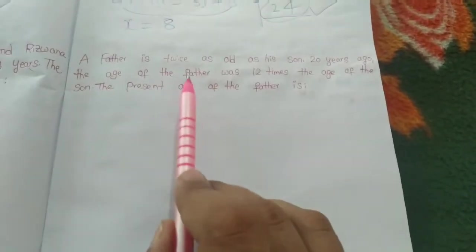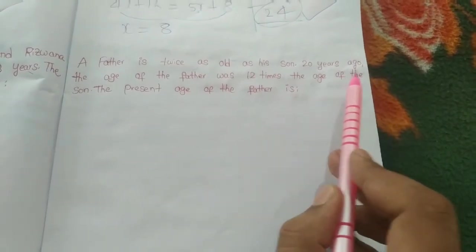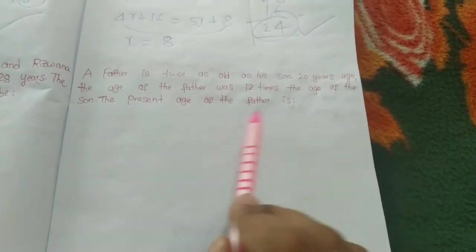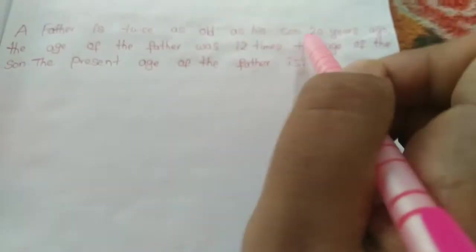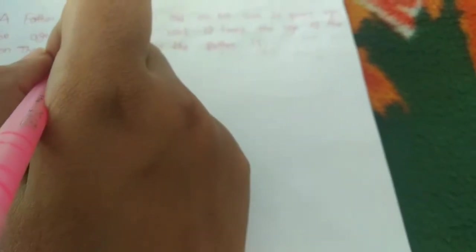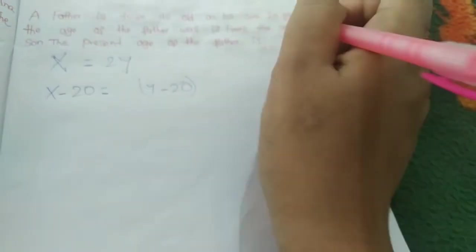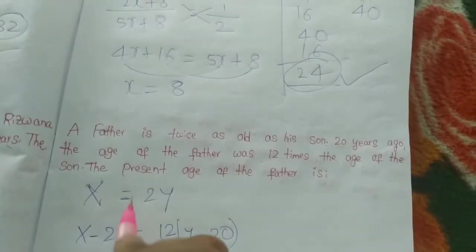Coming to the next question: if a father is twice as old as his son, and 20 years ago the age of the father was twelve times the age of the son, what is the present age of the father? Let the father be x and the son be y. Then x equals 2y. Twenty years ago: x minus 20 equals 12 times (y minus 20).